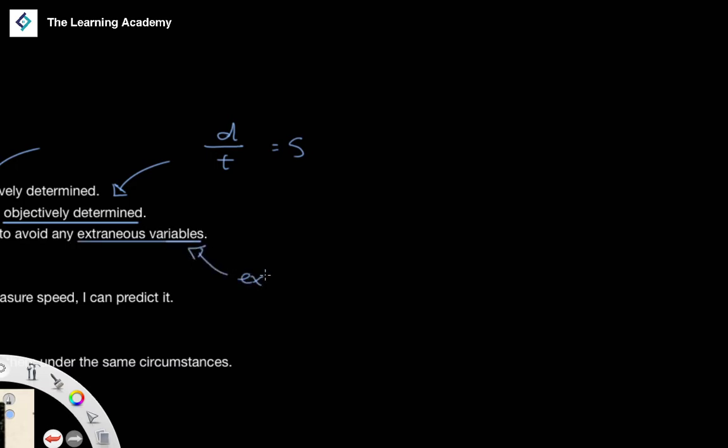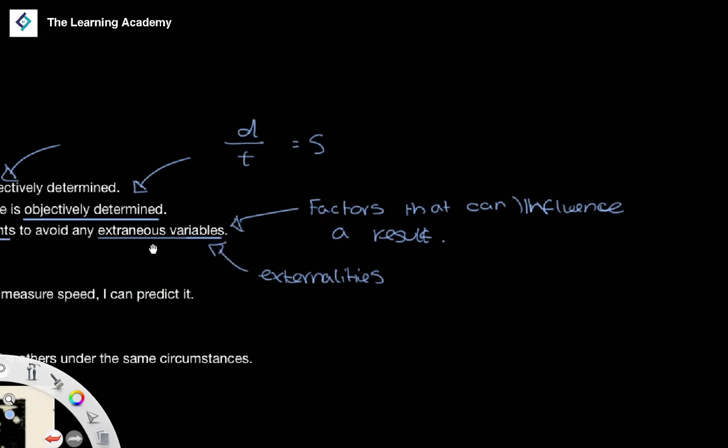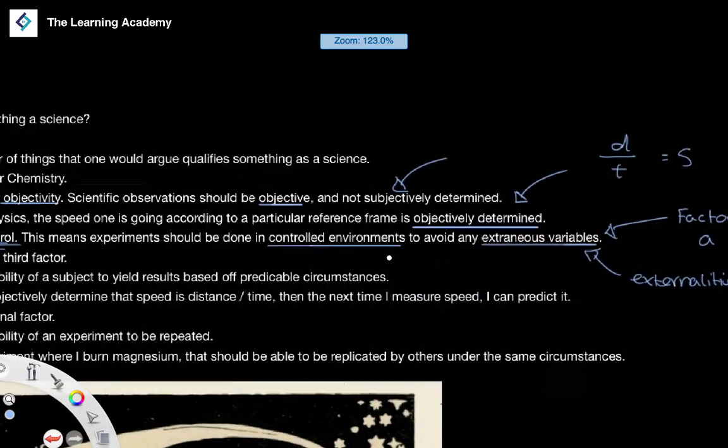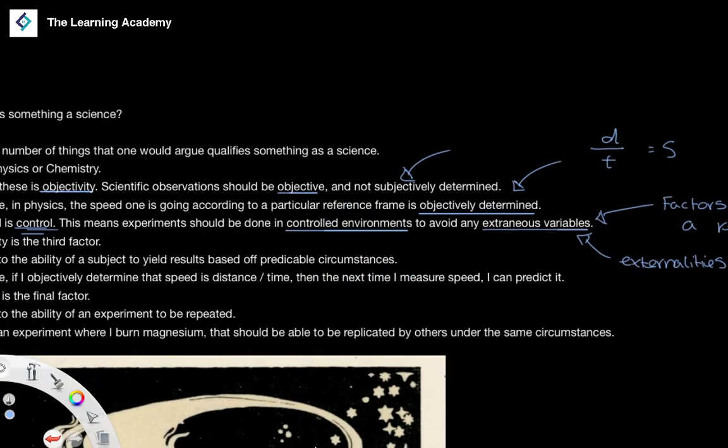And these are variables and other factors that could determine or influence or bias a particular result. So factors that aren't related to the experiment that can influence a result.